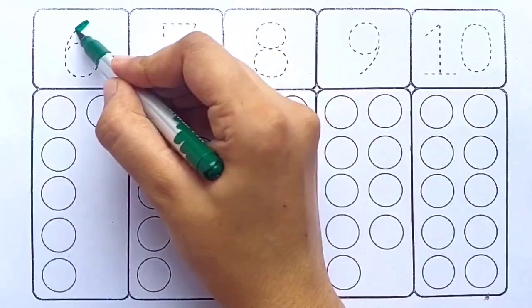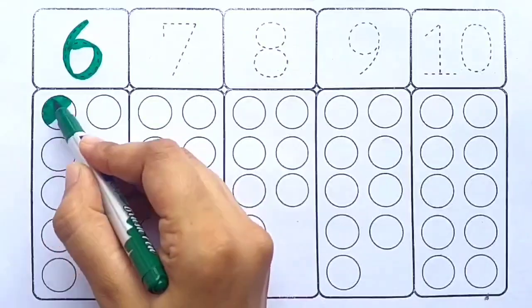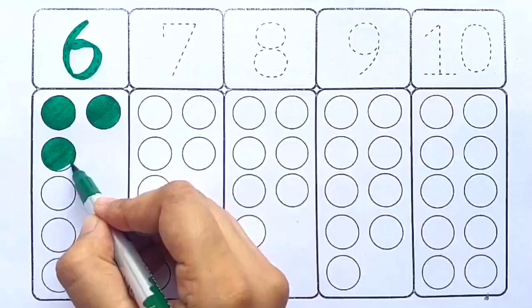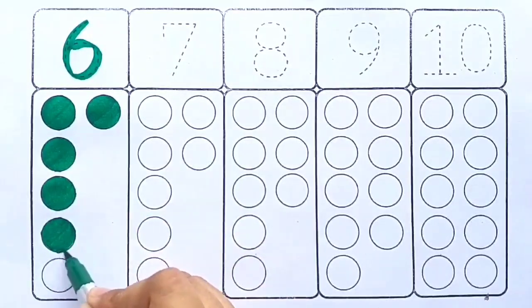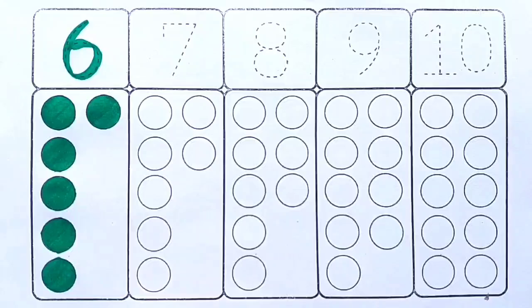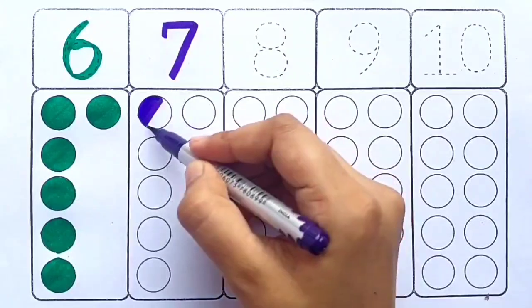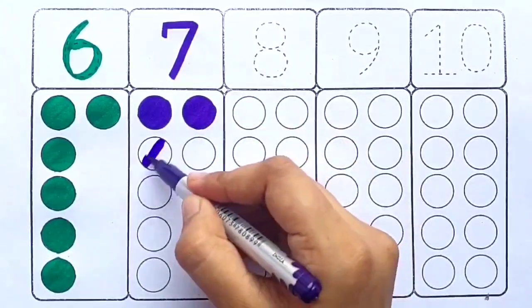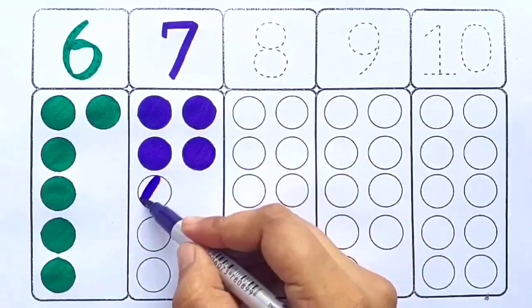Green color six, one two three four five six, six balls. Purple color seven, one two three four five six seven, seven balls.